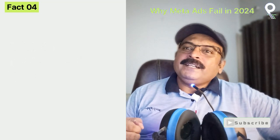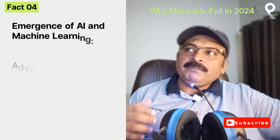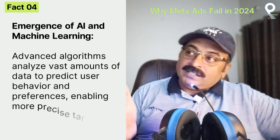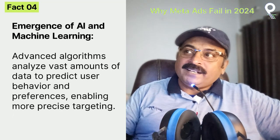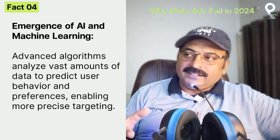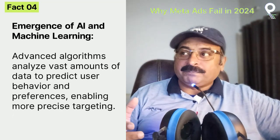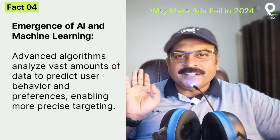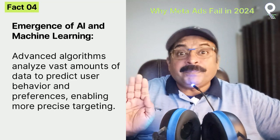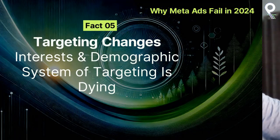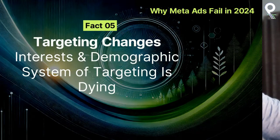The emergence of AI and machine learning means Facebook now has advanced algorithms that analyze user data. We have to analyze the user's behavior and the user's choices. If you rely only on manual targeting on Facebook, you can't do much — it's all handled by the platform now. Interest and demographic-based targeting systems are dying.